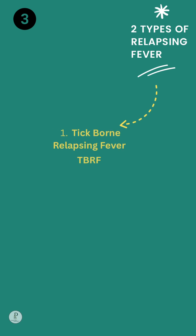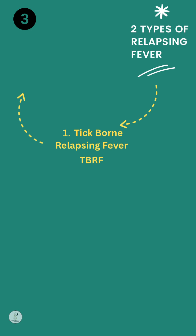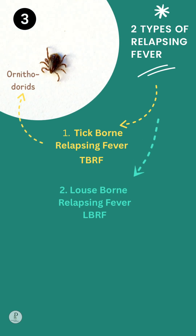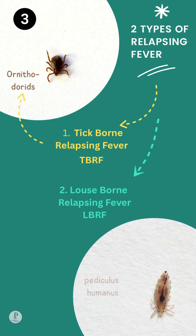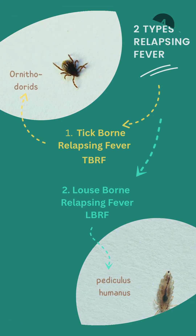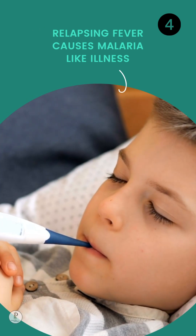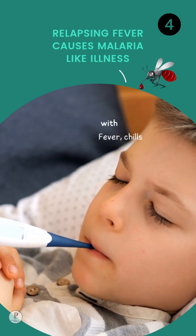There are two types of relapsing fever. The first is tick-borne relapsing fever, caused by Ornithodoros ticks. The second is louse-borne relapsing fever, caused by Pediculus humanus. Relapsing fever causes a malaria-like illness with fever, chills, and myalgia.